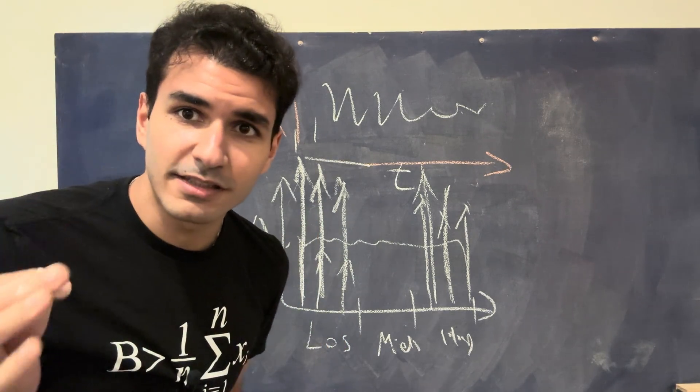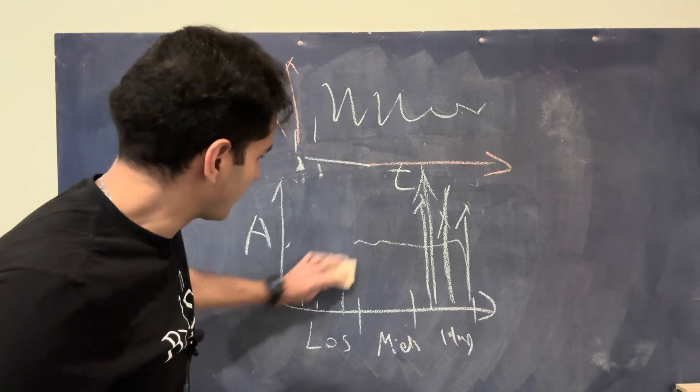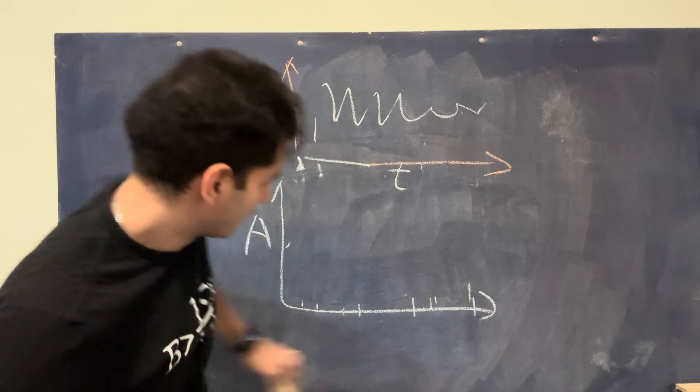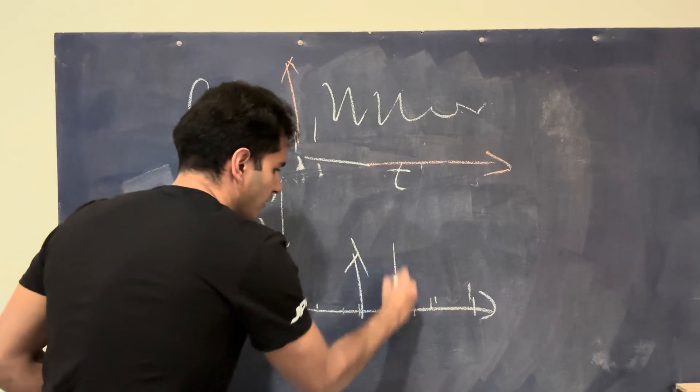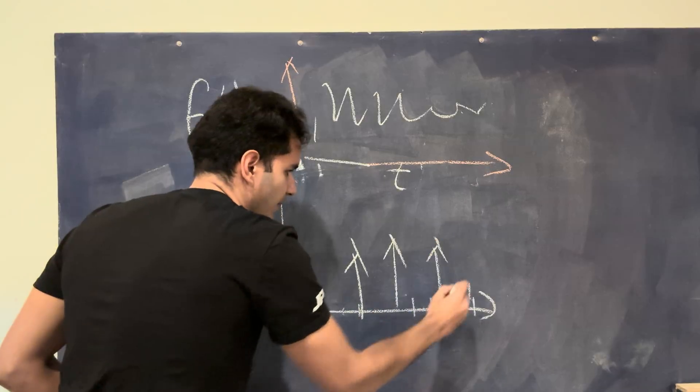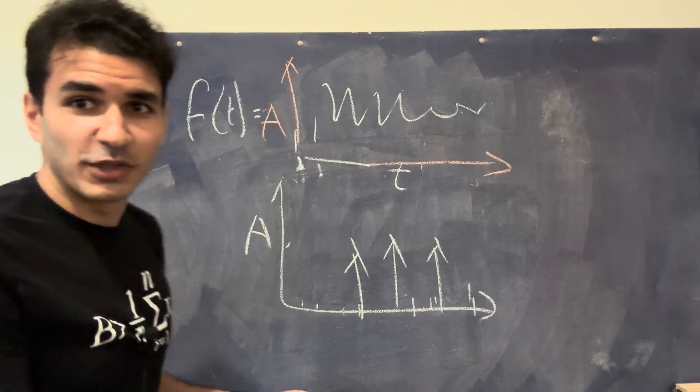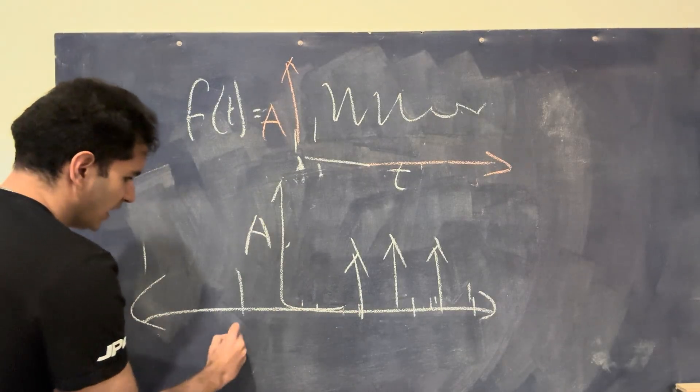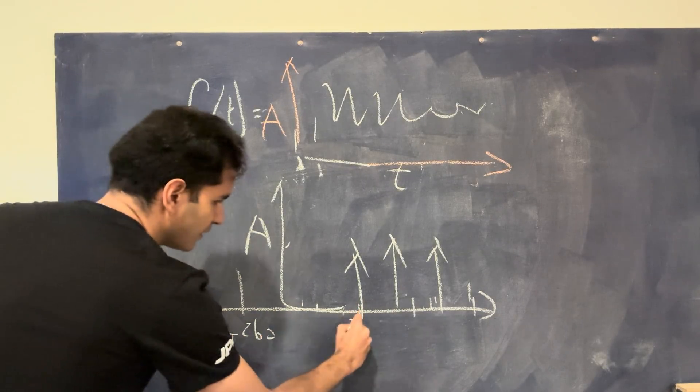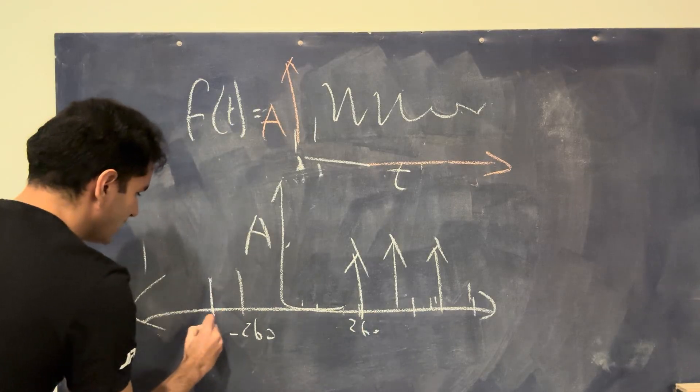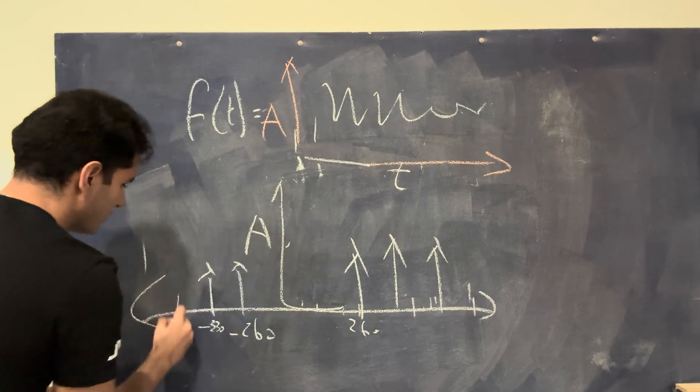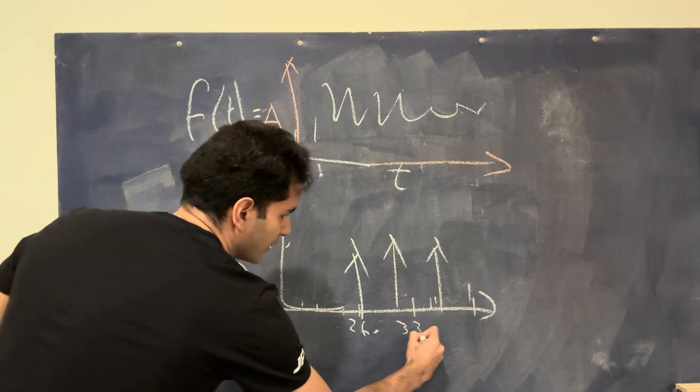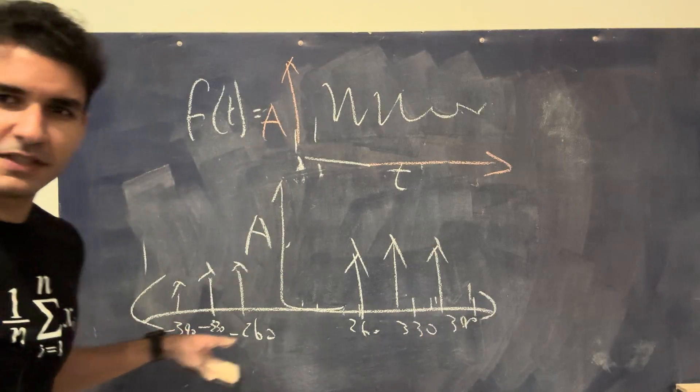But now here's one last thing you need to understand about Fourier transform is if we go ahead and simply plot these frequencies. And again, I'm just going to go back to my 260, 330, 390, or whatever. This is actually not the only thing you see when you apply Fourier transform, you end up with something that is called negative frequencies. So you get minus 260, you get minus 330, and you get minus 390 in addition to 330, 390. So what does that even mean? Why do you have negative frequencies?